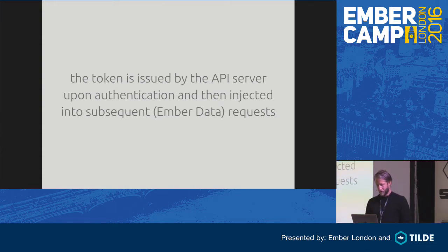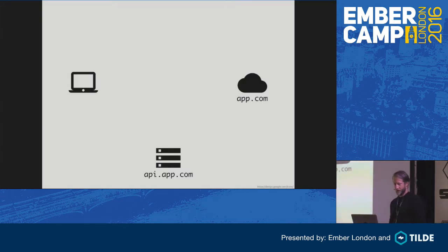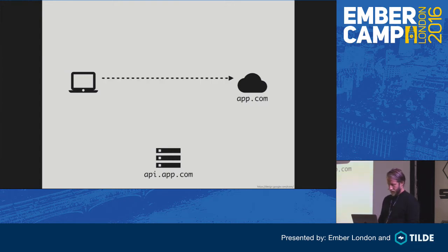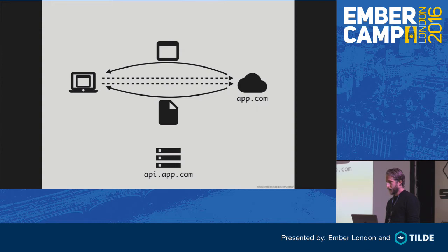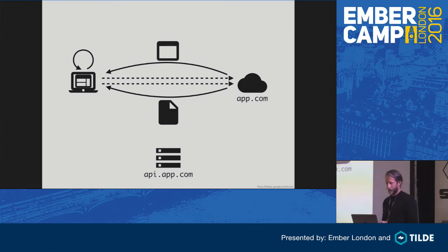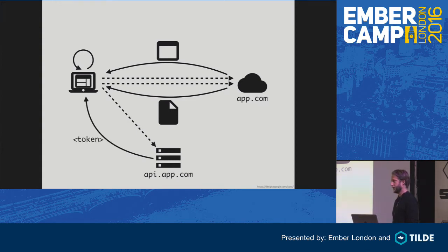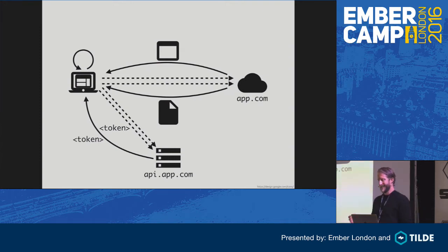Let's look at an example for how that looks, from the first request that loads the application. The client sends a request for the HTML file, which responds with a more or less empty index HTML containing just script tags. Then the client fires a second request to load the JavaScript. Once loaded, the Ember app starts up, renders the page, and from now on takes over in the browser. When the user logs in, they send credentials to the API server, get a token in response, and then include that token in all subsequent requests so the server can authorize them.